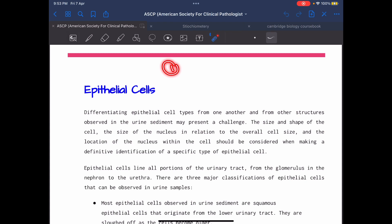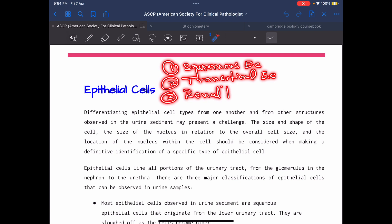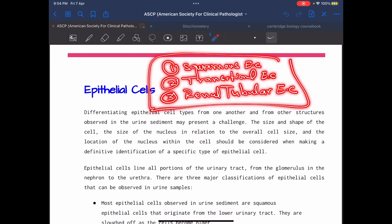First one, squamous epithelial cells. Second, transitional or urothelial epithelial cells. Third is renal tubular epithelial cells. These are the major types of epithelial cells.